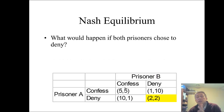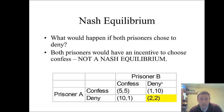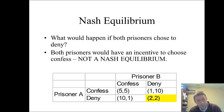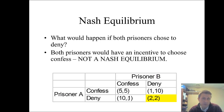If they're both denying, this is the outcome that looks best in the game — they each get a payoff of two years. But the problem is they each have an incentive to change their choice: prisoner A has an incentive to change from deny to confess, going from two years in prison to one year in prison, and so does prisoner B. You only need one person to want to switch to make it not a Nash equilibrium — in this case both of them do.